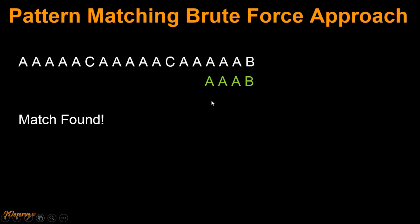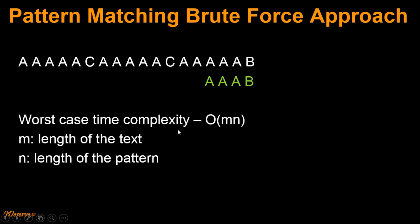Now what would be the time complexity for this method? If you observe carefully, in the worst case, except for the first few and last few characters from the text, each character of the text is matched against all characters of the pattern. Therefore, the worst case time complexity for this method would be O(mn), where m is the length of the text and n is the length of the pattern.